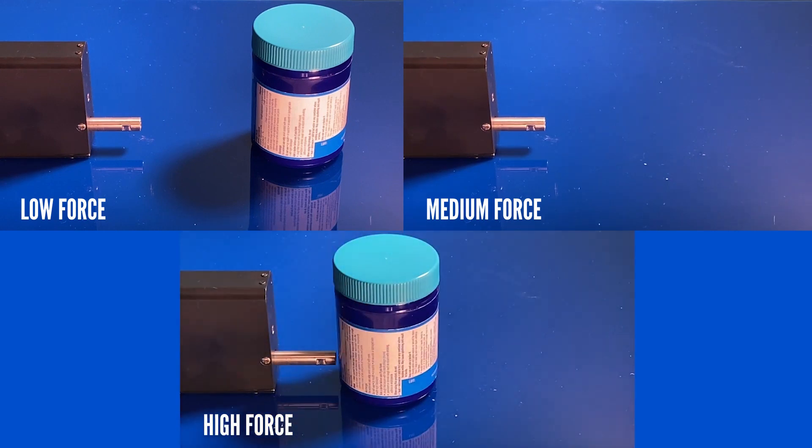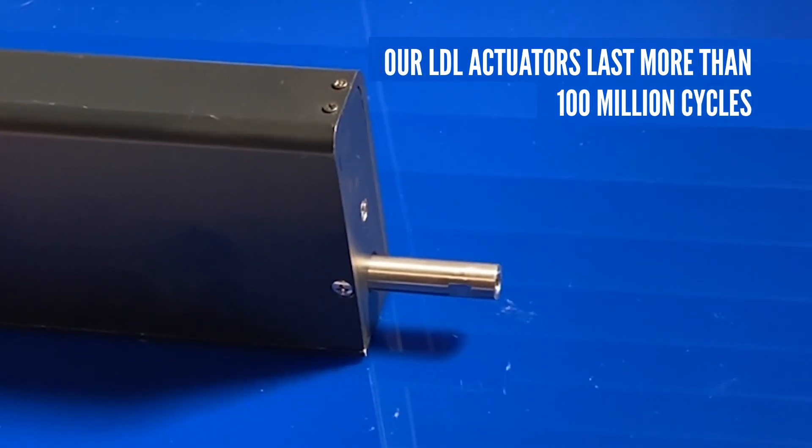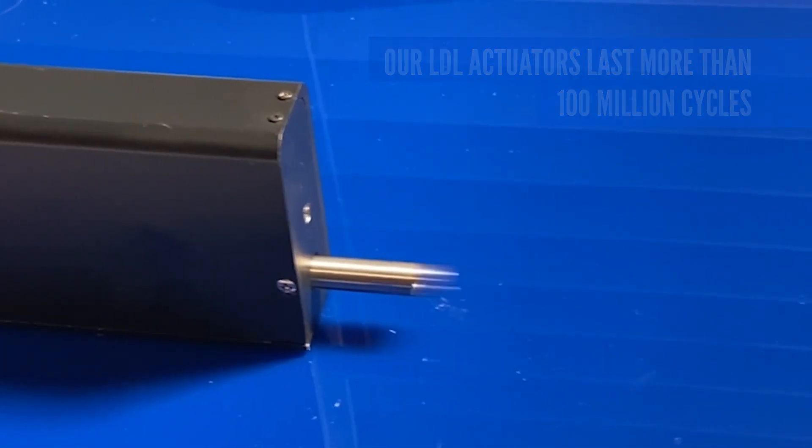Our LDL is programmed for variable speeds, positions, and forces. Hence, it will slow down and stop at the precisely selected point. You can expect our LDL actuators to last more than 100 million cycles, even at fast cycle rates.